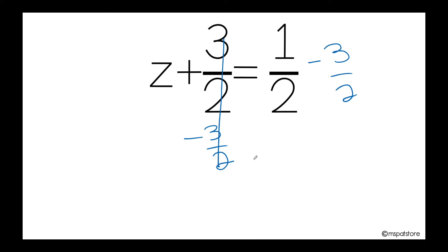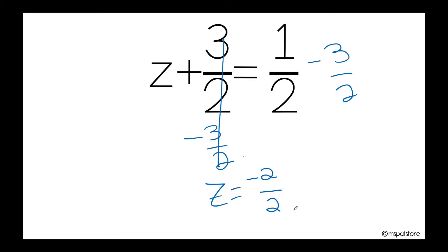Now I'm ready to cancel this out. So I have z is equals to — remember, different signs: I am going to subtract and keep the sign of the greatest absolute value. As they have the same denominators, I do not have to find the least common denominator. I just subtract their numerators and keep the same denominator. 3 minus 1 is 2, but it will be negative 2 because negative 3 halves has the greatest absolute value. The denominator stays the same, so you need to simplify: negative 2 divided by 2 is negative 1. So your final answer is z equals negative 1.